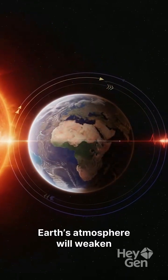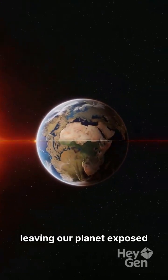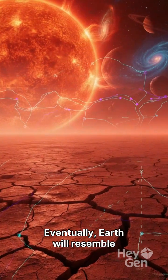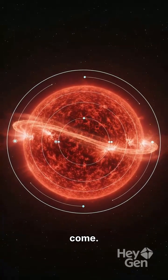As the oceans disappear, Earth's atmosphere will weaken and drift into space, leaving our planet exposed and dry. Eventually, Earth will resemble a scorched desert world. But the most dramatic stage is yet to come.